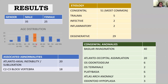The most common age group affected was 30 to 39 years. Amongst the etiologies, congenital etiology was the most common, with 51 cases out of 60. Trauma had five cases, two cases of infective etiology, and two of inflammatory etiology. Among all patients, 29 had degenerative findings.